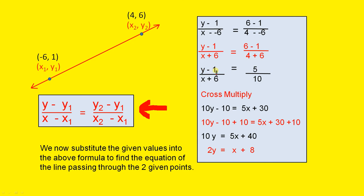The y minus 1 is the same. X plus 6 is the same. On the other side, we have 6 minus 1. That gives you 5. And 4 plus 6 gives you 10. Now, we do the cross multiplication.